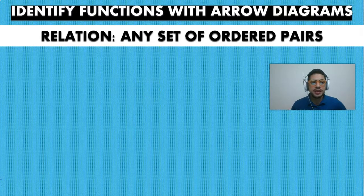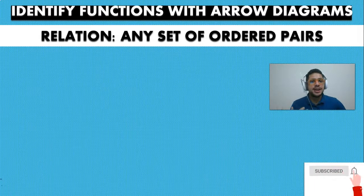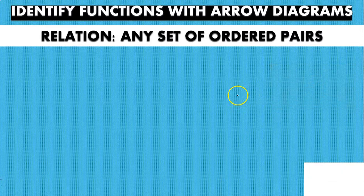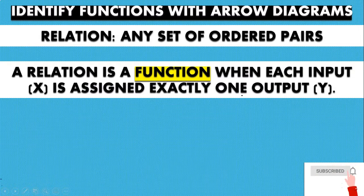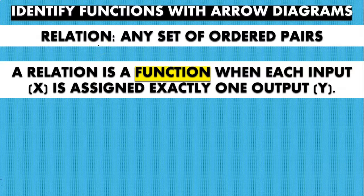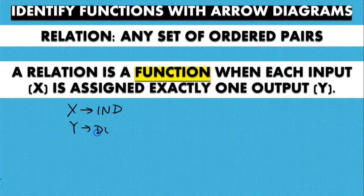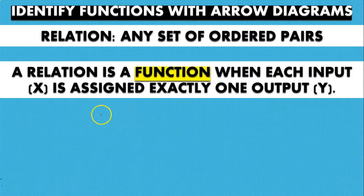With that in mind, the question arises: how do I know if a set of ordered pairs — our relation — is actually a function? We have to look at the definition of a function. A relation is a function when each input, or each value of X, is assigned exactly one output, or one value of Y. Remember that X is our independent variable and Y is our dependent variable.